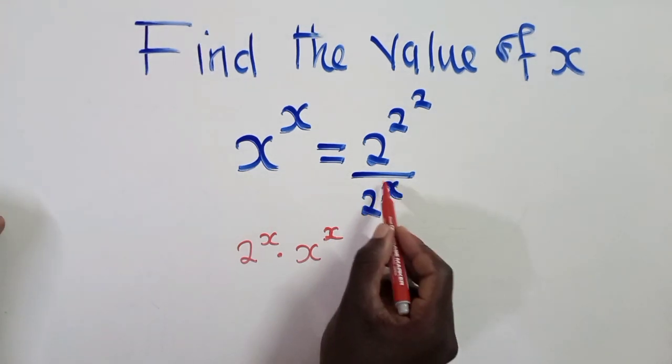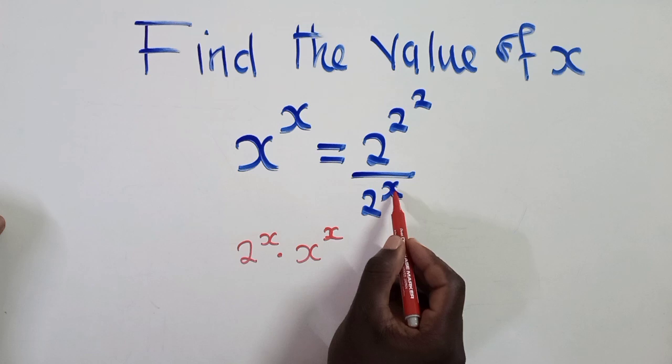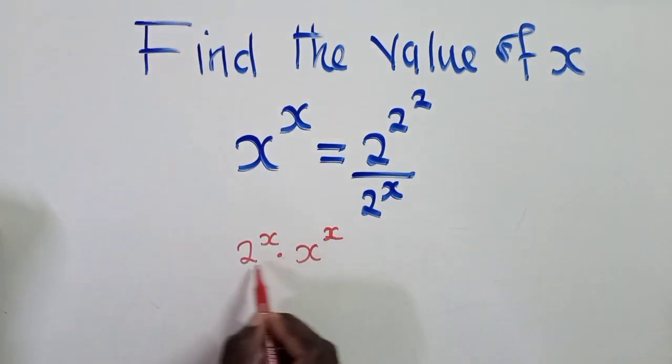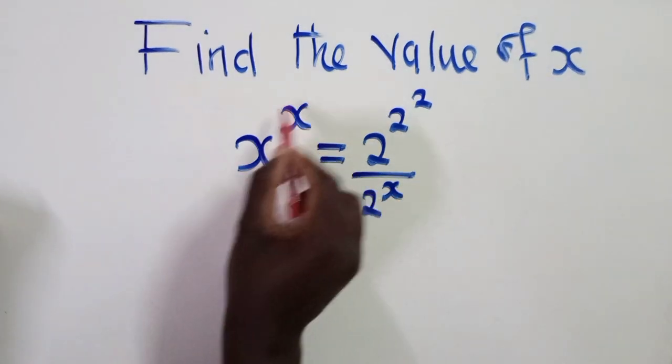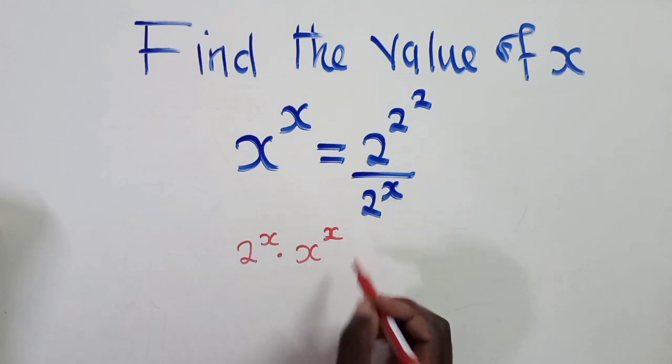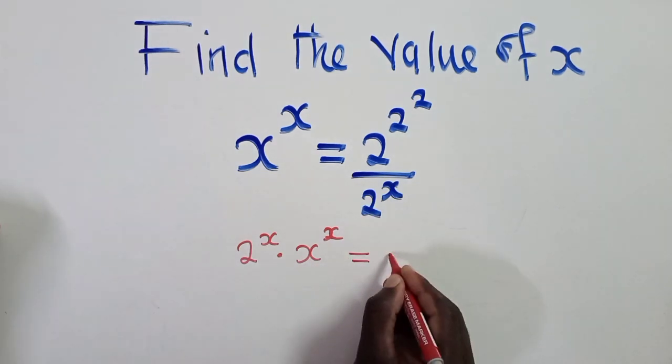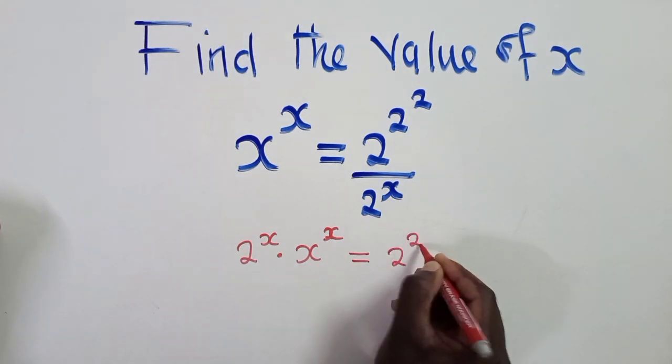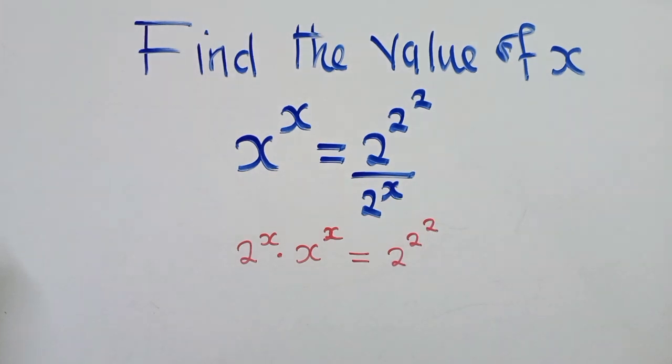If you can see, there is 2 power x here, so you just cross-multiply. And this is what we're going to get when you multiply this by this, which would be equal to 2 power 2 power 2, like that.